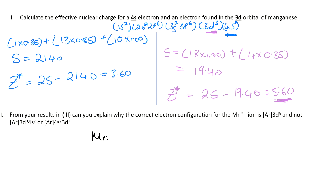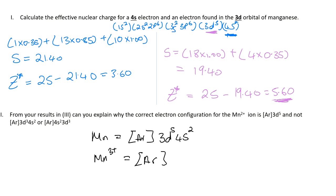So for manganese it's going to be Ar 3d5 4s2. Therefore, if we're going to ionize manganese to form Mn2+, we know that the first electrons to be removed come from the 4s, and that leaves us with Mn 3d5 — and that's the correct electron configuration for Mn2+.